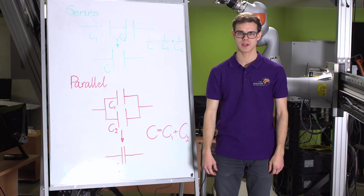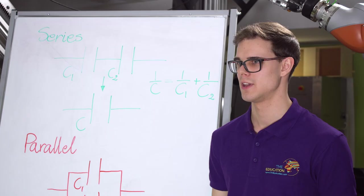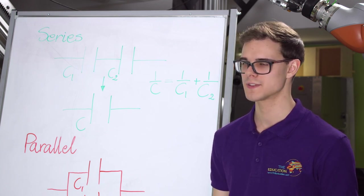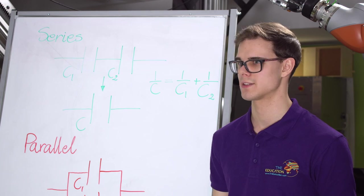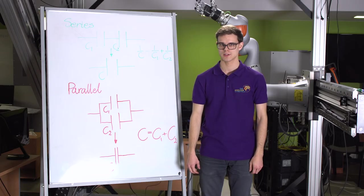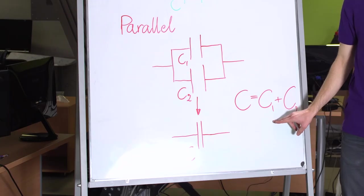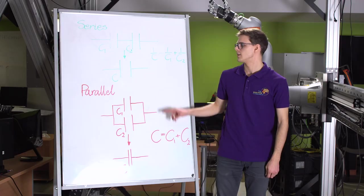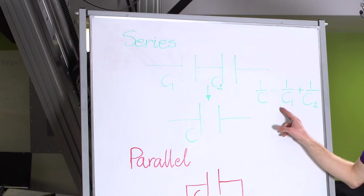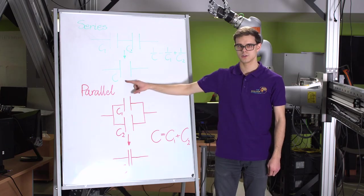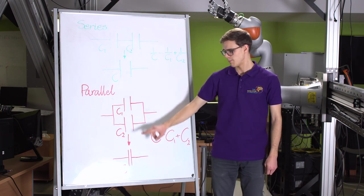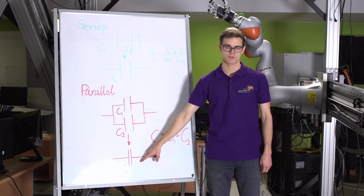Capacitors may also be connected in series or in parallel, giving different resultant capacitances — however, this is opposite to resistors. In a parallel connection, resultant capacitance is the sum of individual capacitances. In a series connection, it is the sum of inverse capacitances. Series connection gives lower resultant capacitance while parallel connection gives higher resultant capacitance.